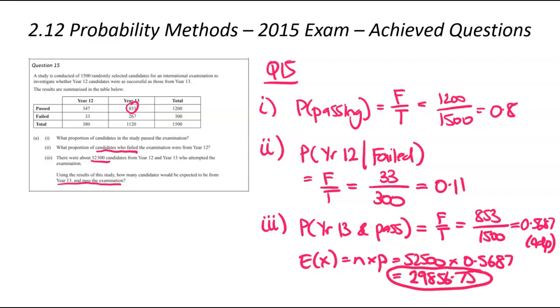This time around, I'm getting 29,856.75. Just a note, this number here is going to be impacted by the rounding from here. If you're one or two students off due to rounding, there's no issue at all. You would have got your mark anyway.